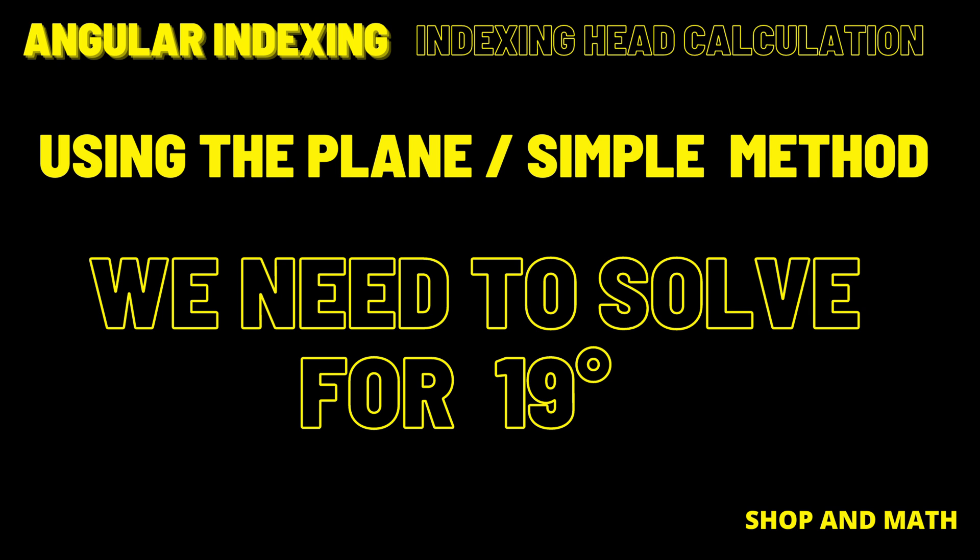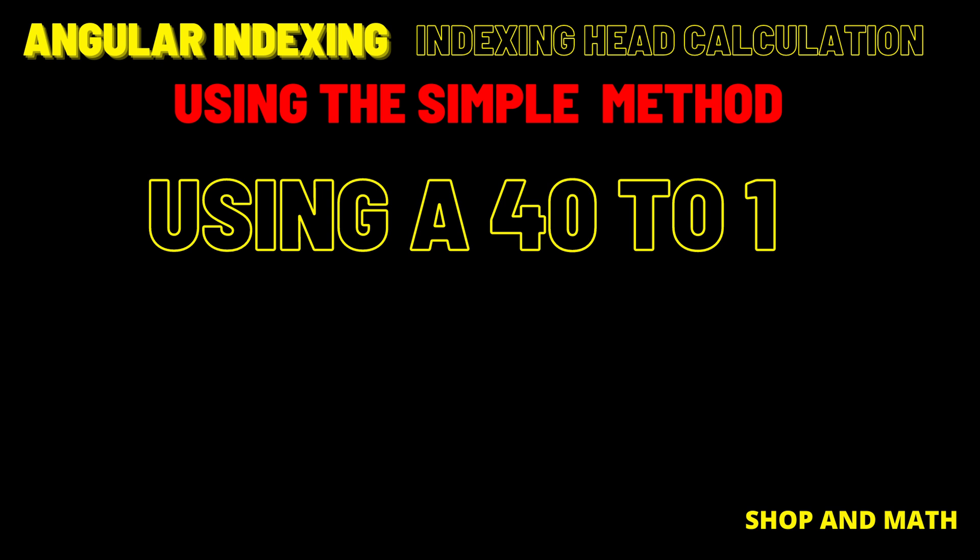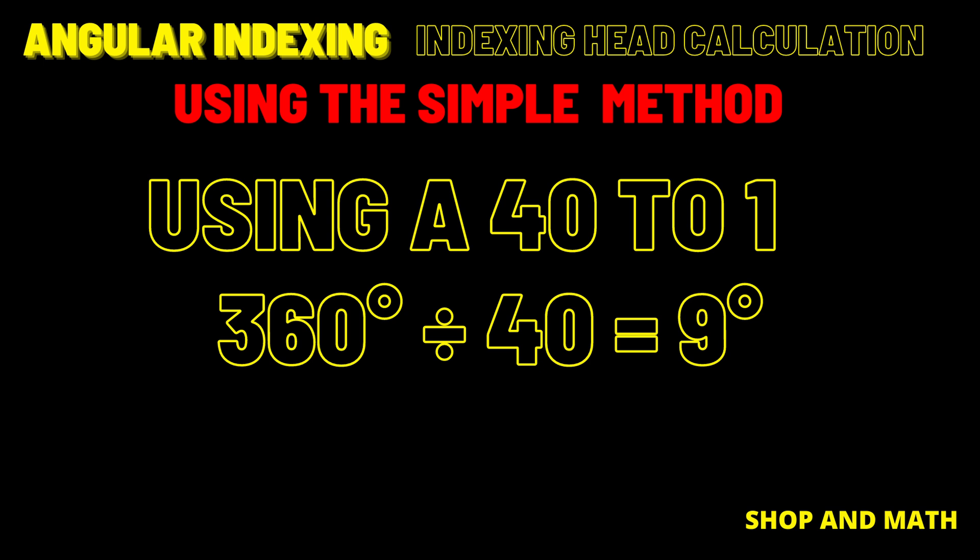Using the plain or simple method we need to calculate 19 degrees. In our case we are going to be using a 40 to 1 geared indexing head. It is possible that it's an 80 to 1 or 120 to 1 and if you're using one of those you must change your calculations up. 40 turns equals one full rotation. One full rotation is 360 degrees, so therefore 360 divided by 40 is 9. So therefore each turn equals 9 degrees.